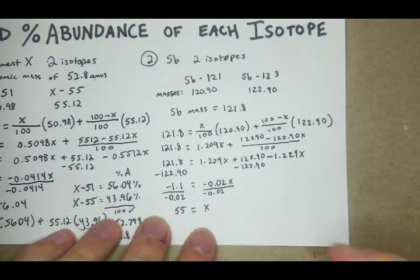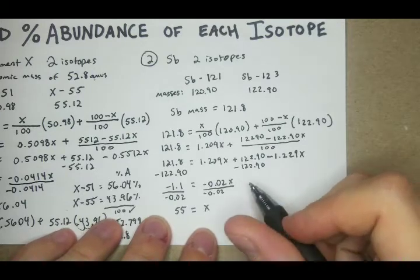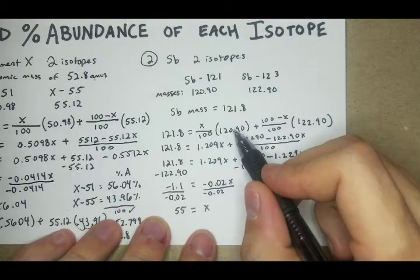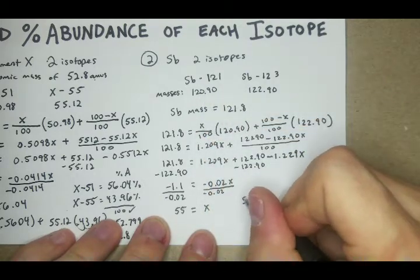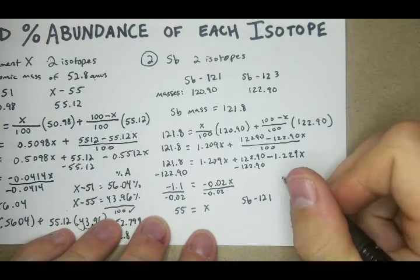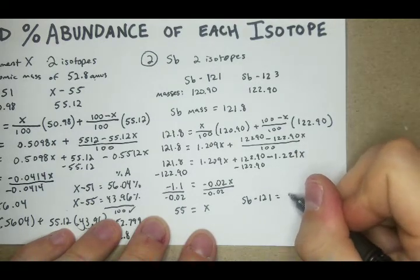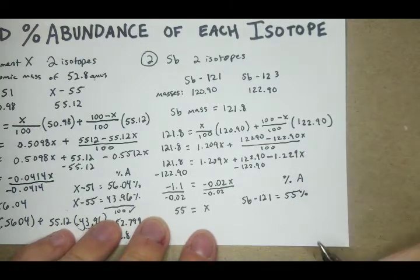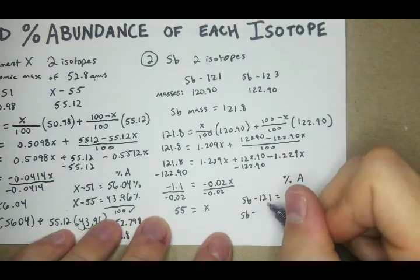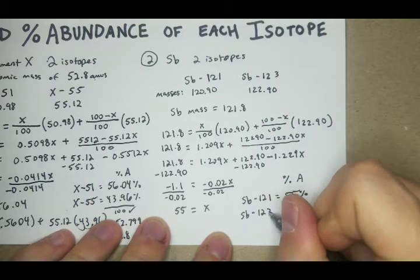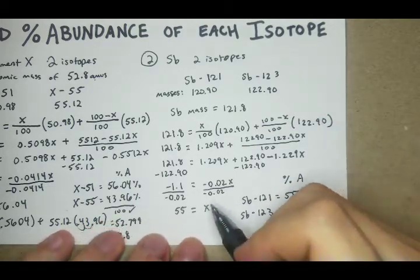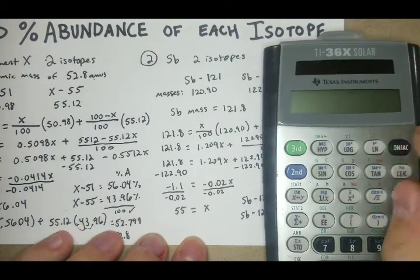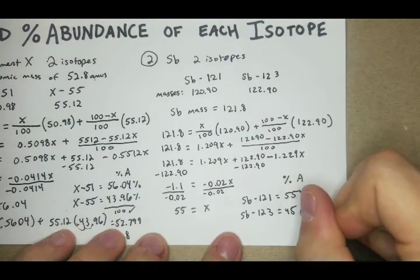Now we can look back and see the relevance of that number. X divided by 100 right here is going to be 55%. So the isotope with this mass, which was Sb-121, is going to have 55% abundance. And then the other isotope, Sb-123, is going to have 100 minus X, 45% abundance.